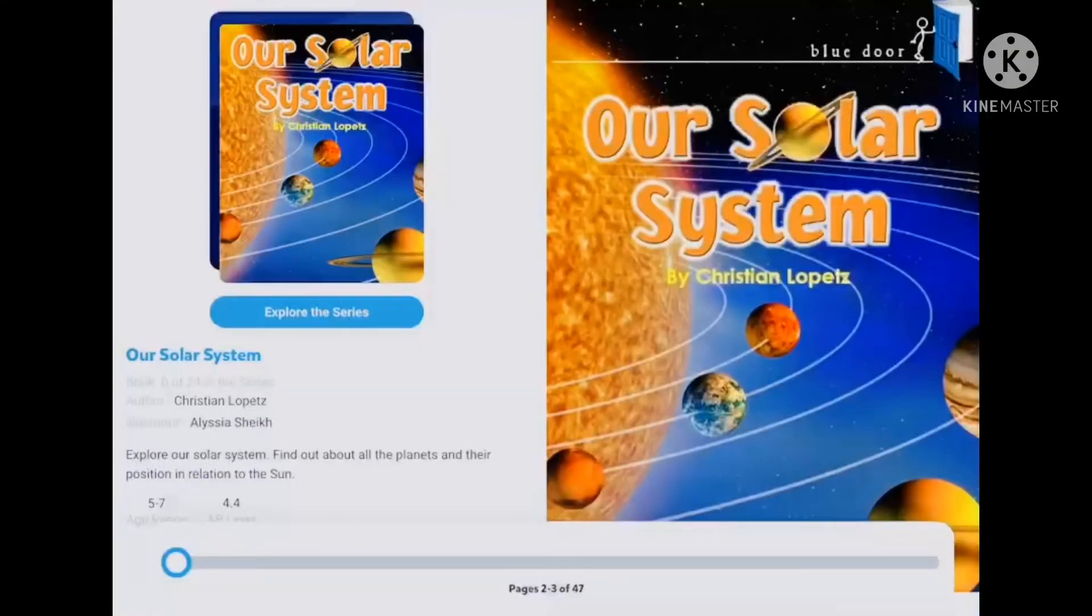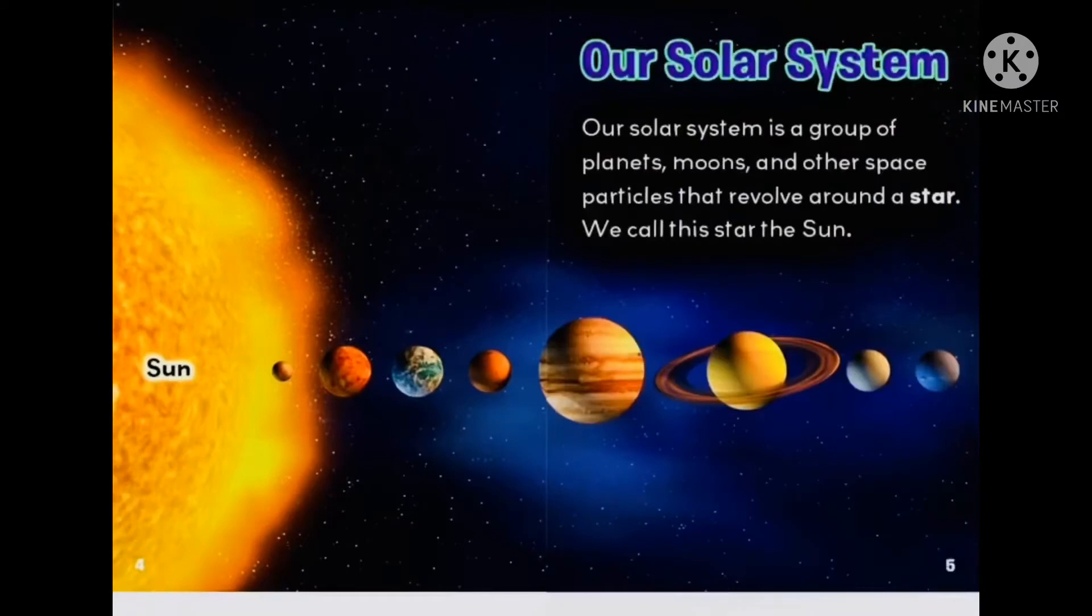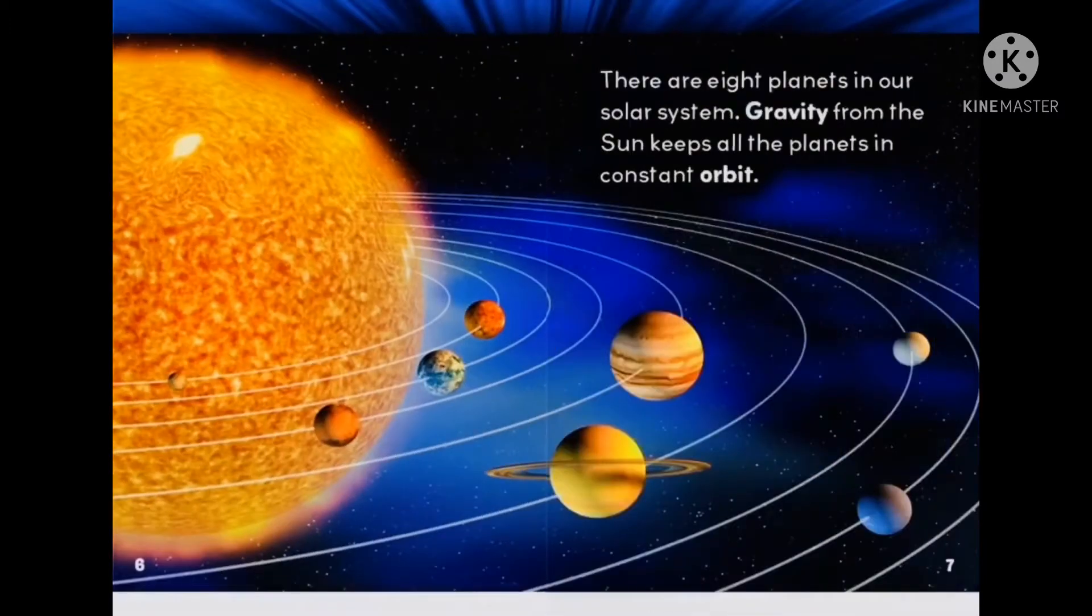Solar System. Our solar system is a group of planets, moons, and other space particles that revolve around a star. We call this star the sun. There are eight planets in our solar system. Gravity from the sun keeps all the planets in constant orbit.